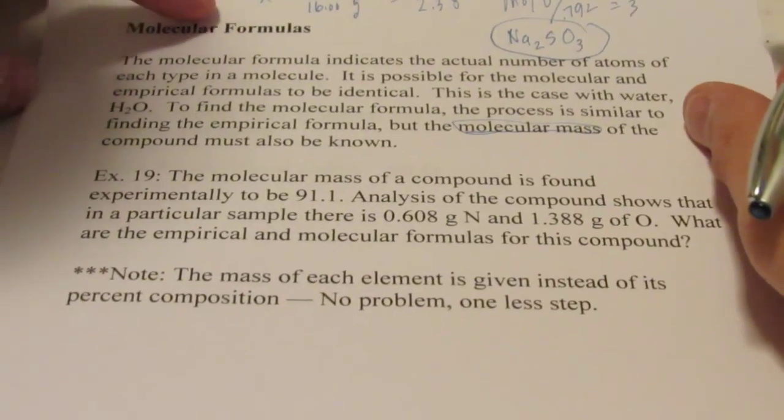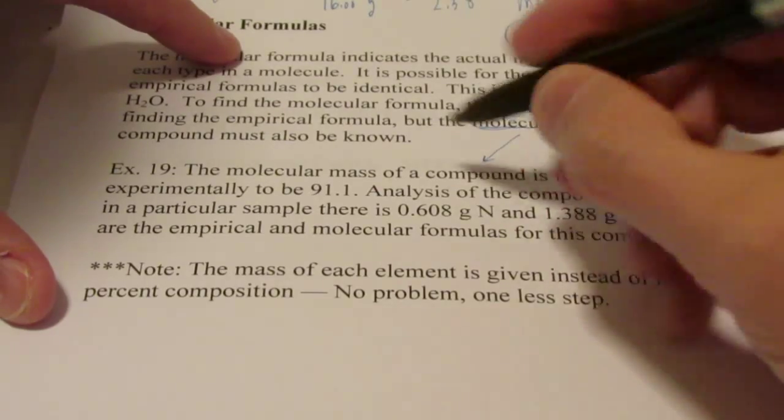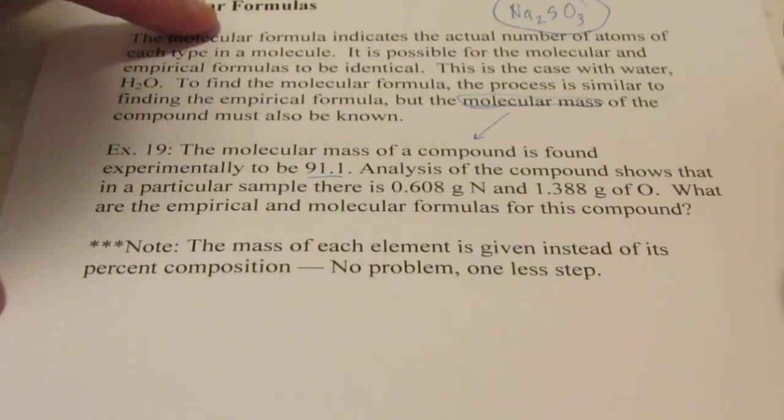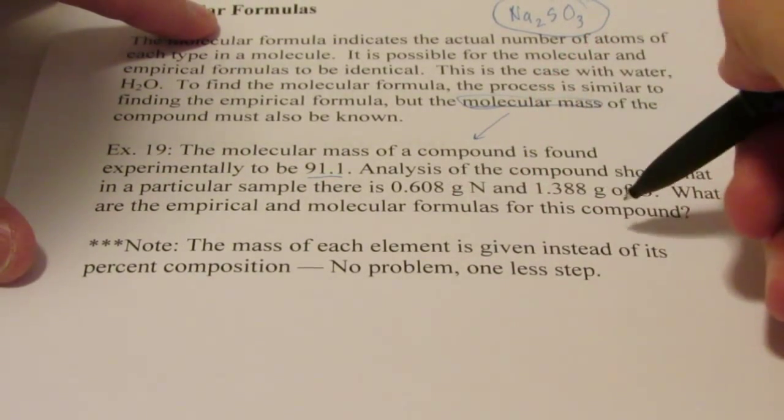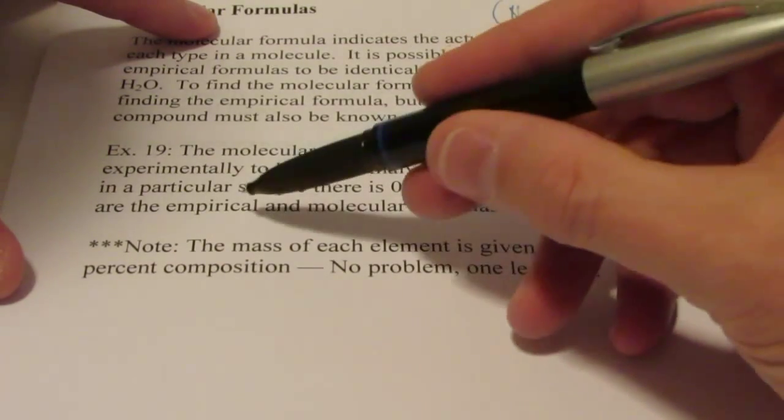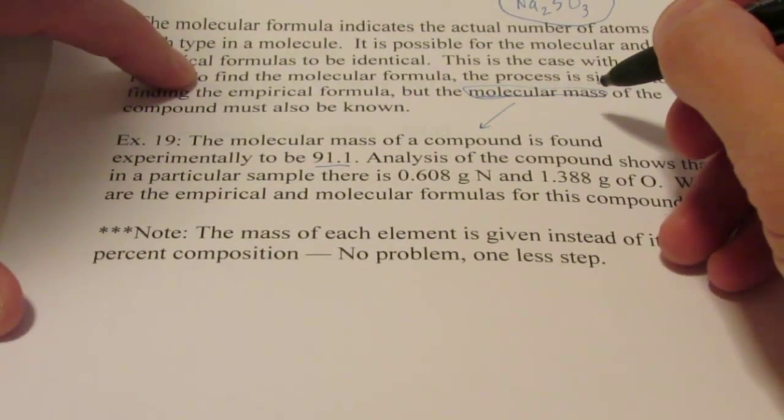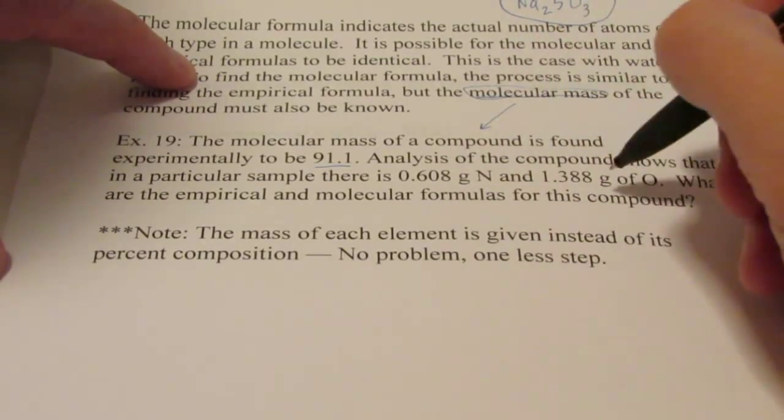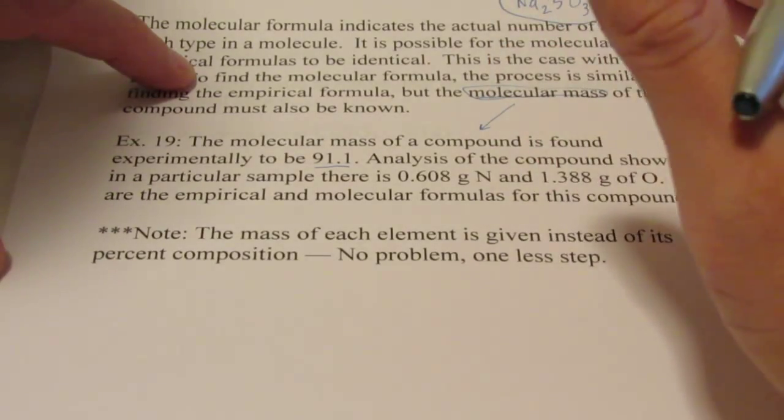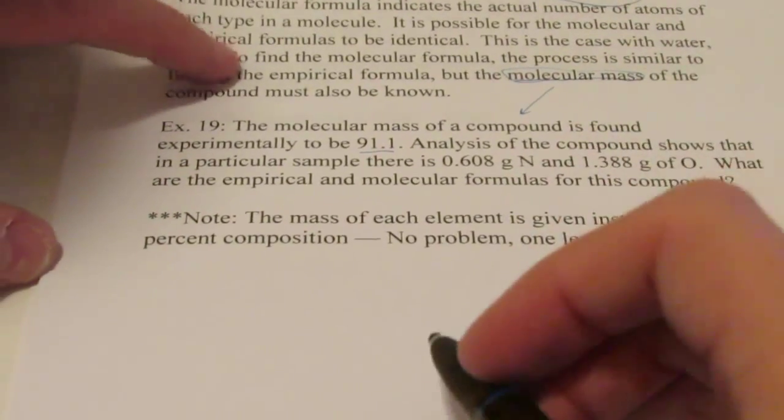That's the case with water, H2O. Its empirical and molecular formulas are the same. To find the molecular formula, the process is similar to finding the empirical formula, but the molecular mass must also be known. So if I expect you to find the molecular formula, I have to give you the molecular weight of the compound. Let's take a look at example 19. The molecular mass of the compound, see I just gave it to you, is found to be 91.1 grams per mole. The analysis of the compound shows that I have 0.608 grams of nitrogen and 1.388 grams of oxygen, so only two elements. What's the empirical and molecular formula for this? Now special note here, I did not give you percent by weight this time, I actually gave you the weight. So we don't have to assume 100 grams of the compound to find out how many grams of each element I have.